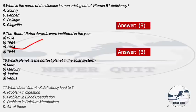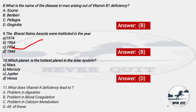Question 10: Which planet is the hottest planet in the solar system? Options: A) Mars, B) Mercury, C) Jupiter, D) Venus. The right answer is option D — Venus. Many students think it is Mercury because it is closest to the sun, but Venus is the hottest planet because it has many gases that trap heat.